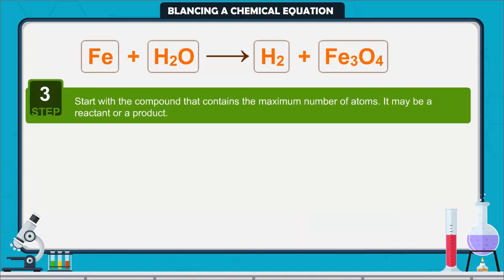Step 3. Start with the compound that contains the maximum number of atoms. It may be a reactant or a product. Using these criteria, we select Fe3O4 and the element oxygen in it.